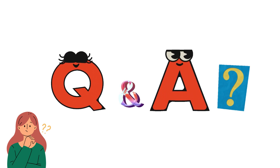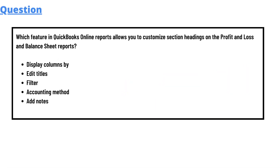Today's question which we'll be discussing is: which feature in QuickBooks Online reports allows you to customize section headings on profit and loss and balance sheet reports? We have some options here: display column by,